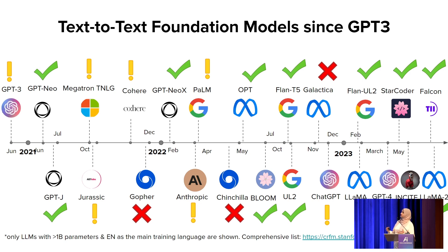This is just a snapshot of what it looks like today. Model access can keep changing, and even their licenses can keep changing — model developers can decide to make these changes at any point. To give an example, Google PaLM was first a closed access model, but then it became limited access via API usage.